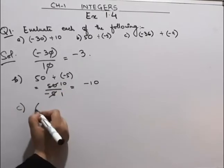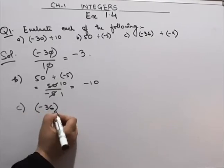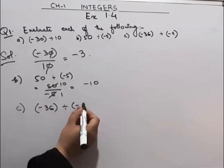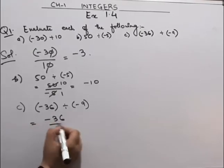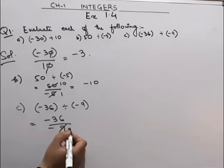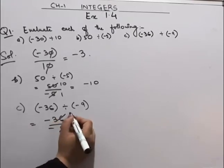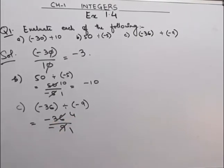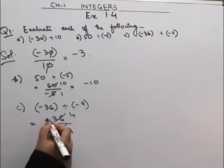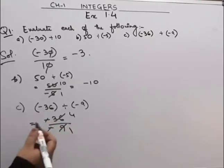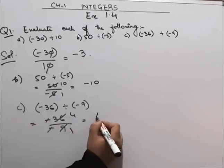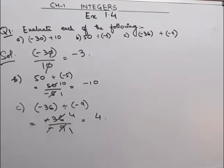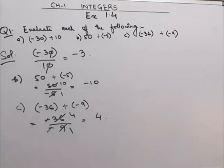Now coming to the C part. C part is minus 36 divided by minus 9. In the 9 table, 9 fours are 36. This minus will also cancel out. Both minuses will cancel out. Our answer will be 4. So the answer for the C part will be 4.